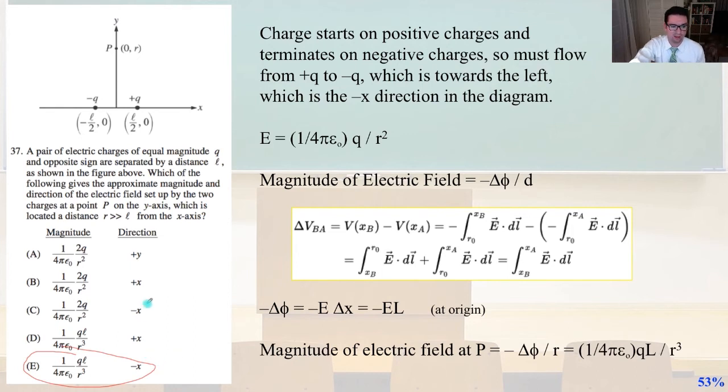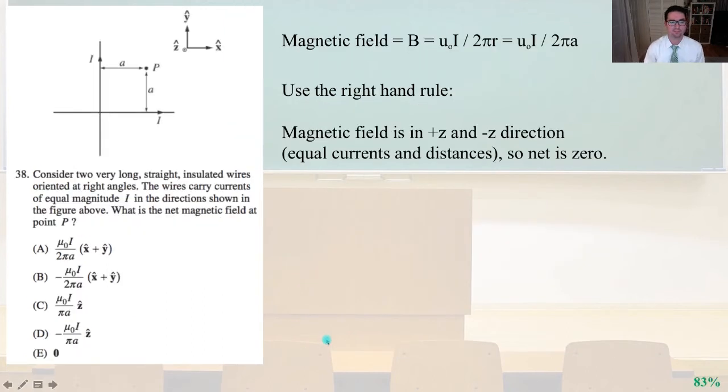And again, from the beginning, we could rule out everything that's not in the negative X direction. So we were choosing between C and E, and it took a lot of work to get to E from C.